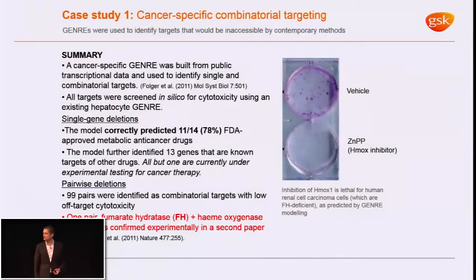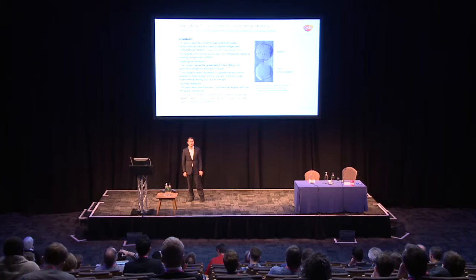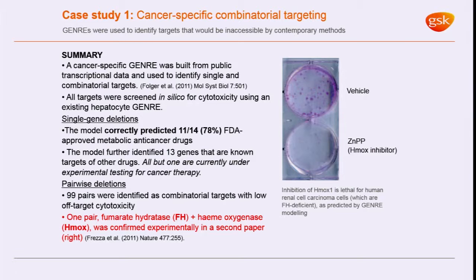I want to draw your attention to a pair of papers. I saw this presented at a small conference in Iceland a few years ago — it just knocked me off my feet. The two papers were one in Molecular Systems Biology and one in Nature. The same techniques I've described were used — models were built of liver metabolism and cancer cell metabolism. In the first instance, single gene deletions in silico were performed: you just take that reaction out of your network and see what happens to the survivability of the cell. When they did single gene deletions, they got 80% of FDA-approved metabolic anti-cancer drugs, and the ones they missed were outside the scope of their model — a really fantastic result.